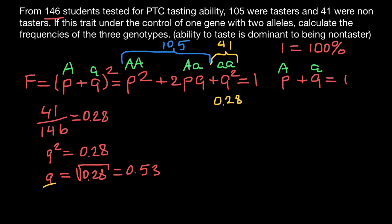Now that we know the frequency of q is 0.53, we can instantly find the frequency of allele p, the dominant allele: p equals 1 minus 0.53, which gives us 0.47. So we put 0.47 for p.